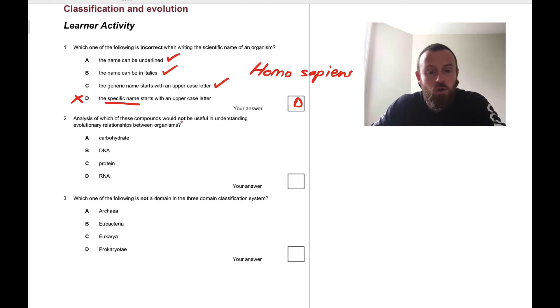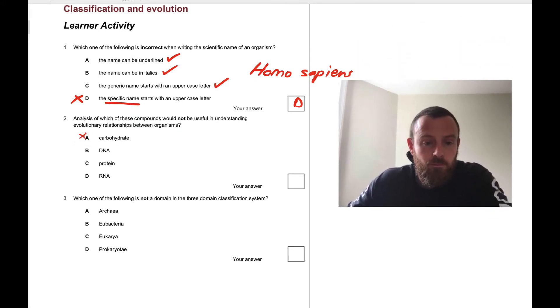Analysis of which of these compounds would not be useful in understanding evolutionary relationships between organisms? DNA would, because you can compare the codes. Protein also would, because you can compare the amino acids like in hemoglobin. RNA as well, like ribosomal RNA, the 16S RNA has been used a lot in phylogenetic studies. Carbohydrates, you can't tell much from looking at starch. Starch is going to be starch in pretty much all organisms.